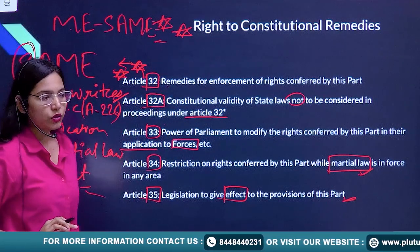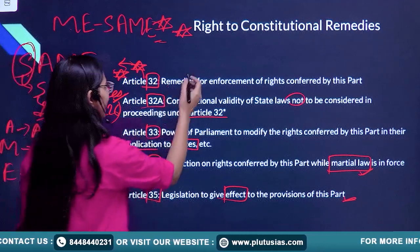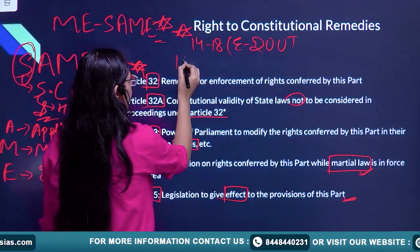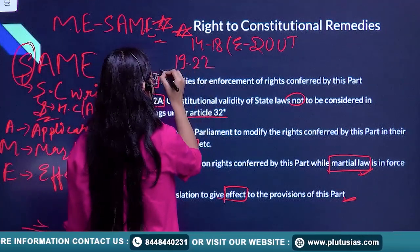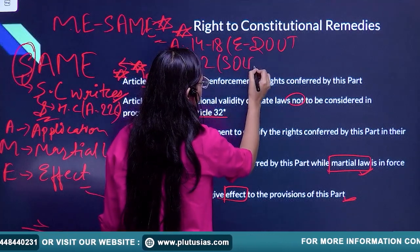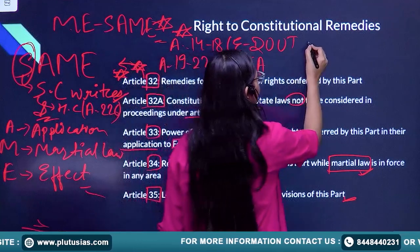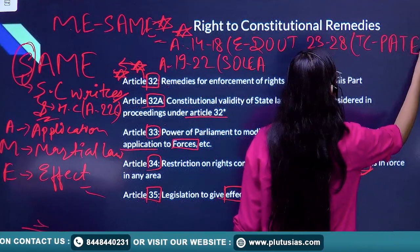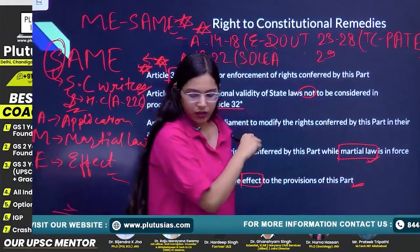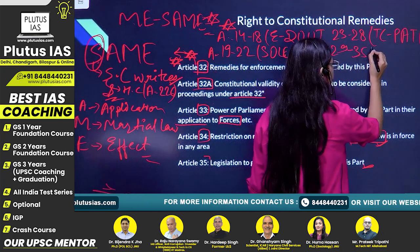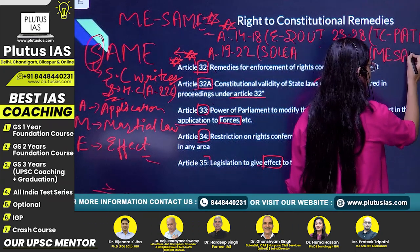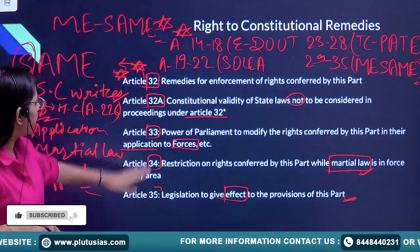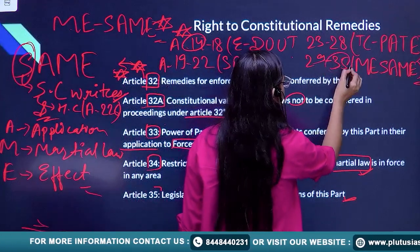Now you have almost four tricks to remember fundamental rights at a glance: Article 14 to 18 by EDOUT, Article 19 to 22 by SOLIA, Article 23 to 28 by TC and PATE, and Article 29 to 35 by ME and SAME. These are all the tricks you need to remember fundamental rights from Article 14 to 35.